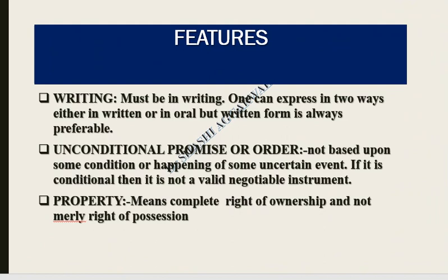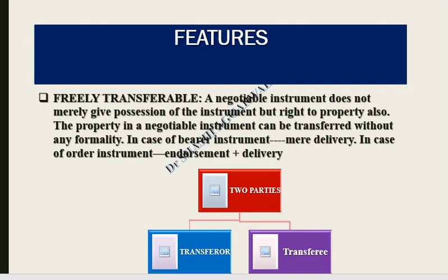The property in a negotiable instrument means that when we transfer it, we have a complete right of ownership. The negotiable instrument does not merely give the position — it gives the right of ownership. The property in a negotiable instrument can be transferred without any formality. In the case of bearer instruments, we just hand it over and the other person will honor it. But if it is an order instrument, there must be endorsement — we sign the endorsement — and then deliver it.